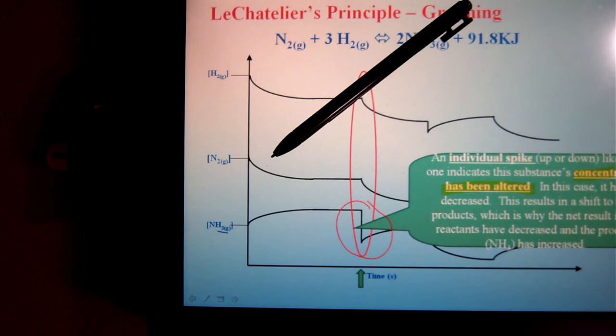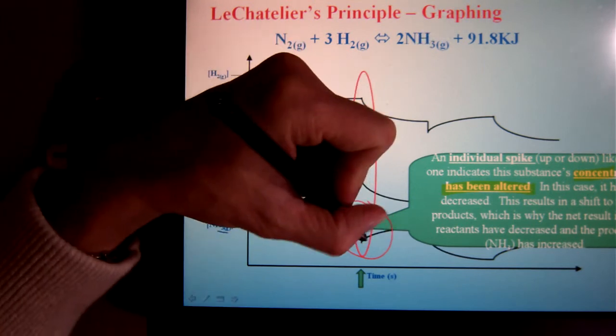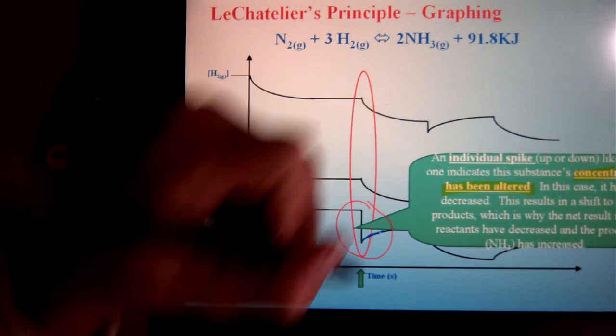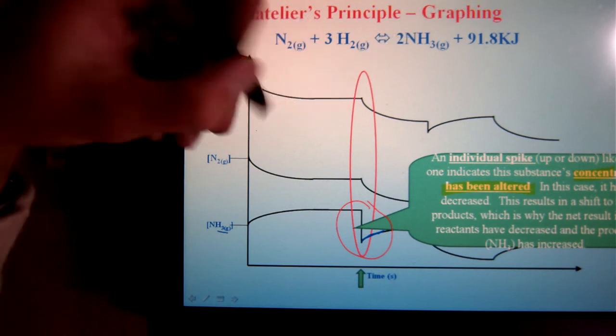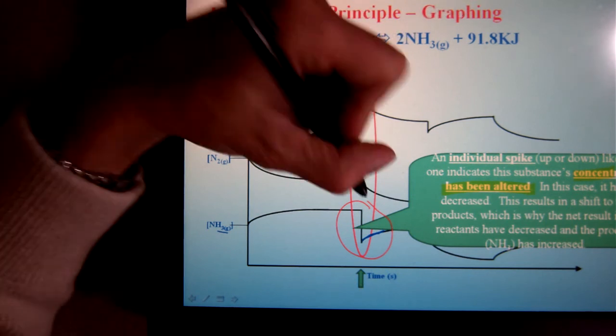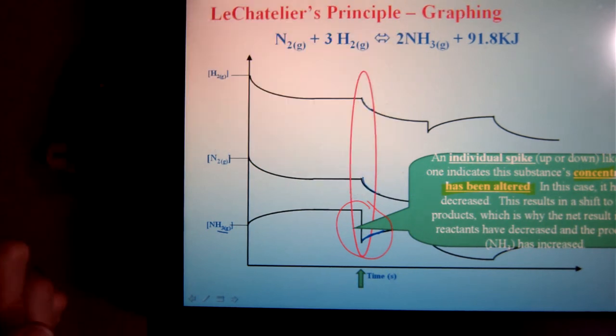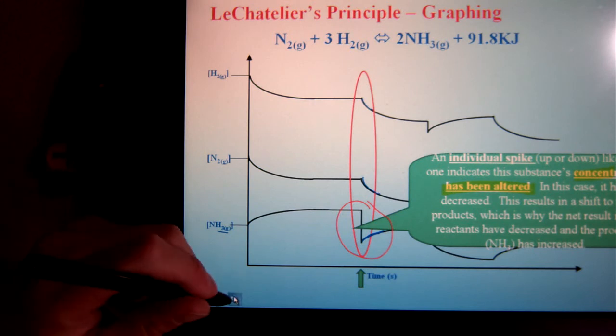Which means the response of the graph should be that ammonia should go back up. Which it has, you can see that down here. And the concentration of nitrogen and hydrogen should decrease. Which you see here and you see here. So that would be an accurate depiction. So one single sharp spike equals a concentration change.